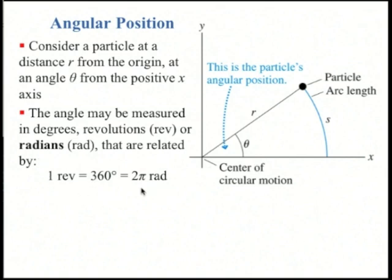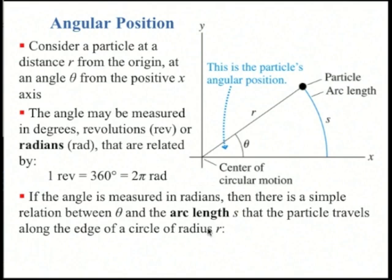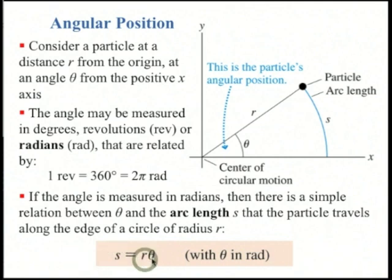The relation between units is: one revolution equals 360 degrees, which also equals 2π radians, or about 6.28 radians. The nice thing about radians is that you get the equation s equals r times theta, relating arc length to radius, when you measure theta in radians. That's why radians is the SI unit of angles.